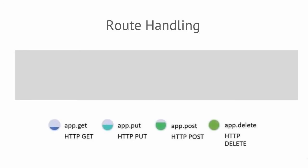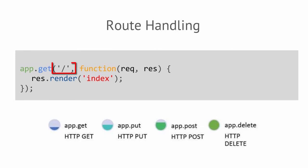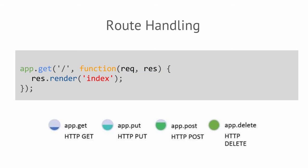We can define our routes using standard get, put, post, and delete verbs. Our first parameter sets the location of a route. Our second parameter is a function that accepts a request and response object. The request object represents incoming HTTP requests. The response object is something you give to the user, such as a web page, an image, or data like JSON or XML. In the example below, when a get request is made to our root URL, we respond by rendering our index file located in our views folder.